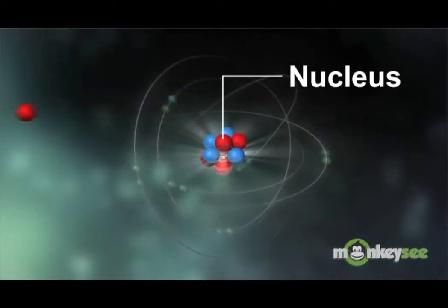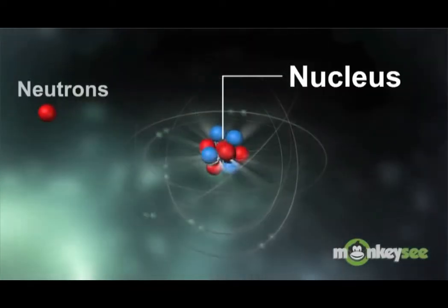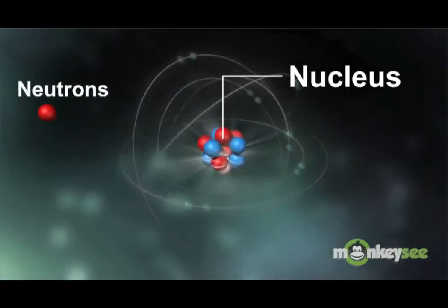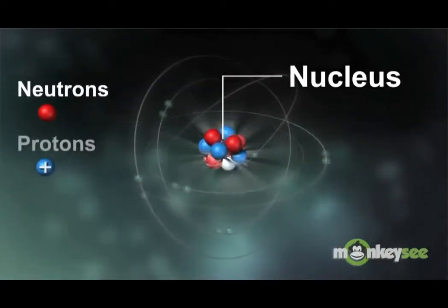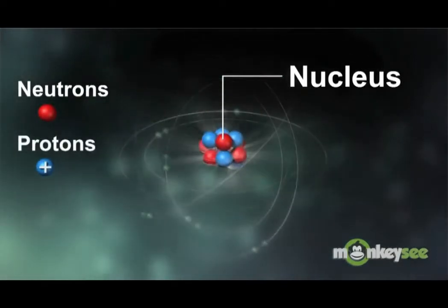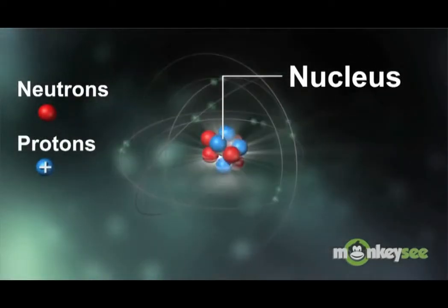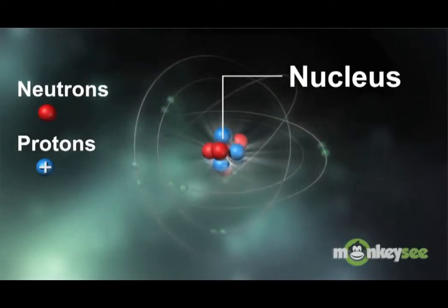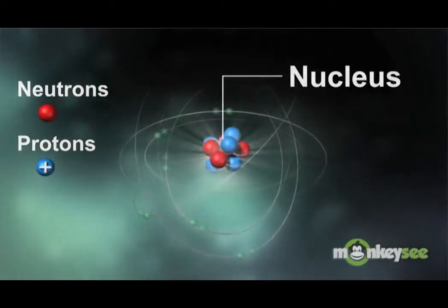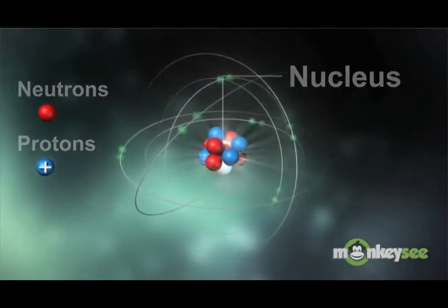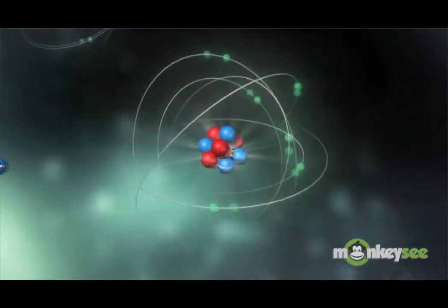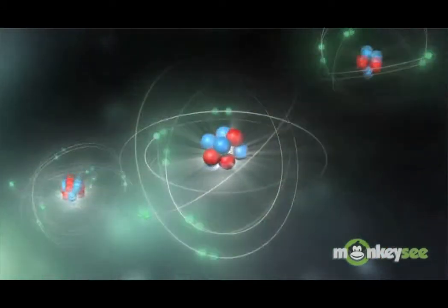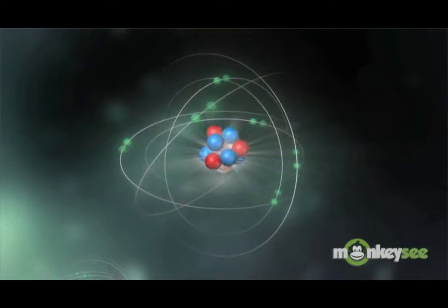The nucleus contains neutrons, which have a neutral electric charge, and protons, which are positively charged. The number of protons in an atom determines an element's physical properties. No two elements have the same number of protons.